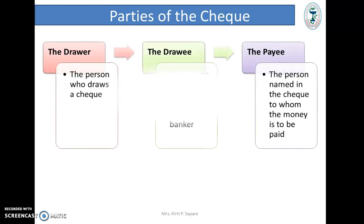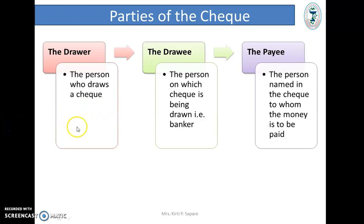Parties of the check — there are three parties: Drawer, Drawee, and Payee. The Drawer is the person who draws or writes the check. The Drawee is the person on whom the check is drawn, i.e., the banker. The Payee is the person named in the check to whom money is to be paid. So: the person who signs the check is the Drawer, the bank is the Drawee, and the person named to receive the money is the Payee.